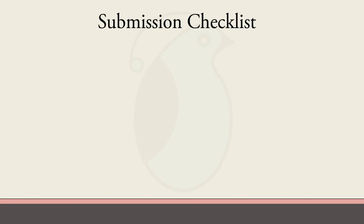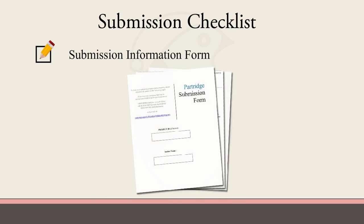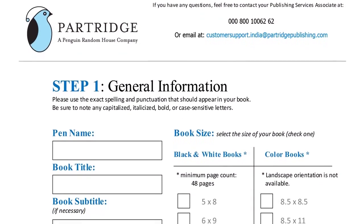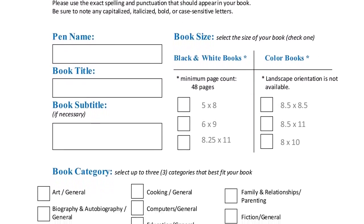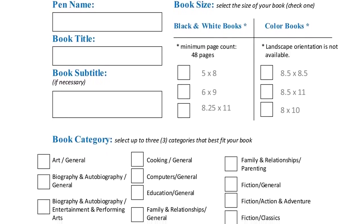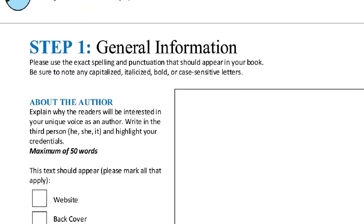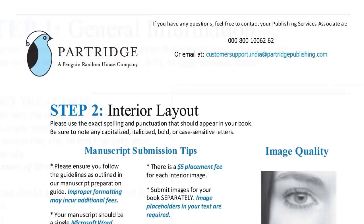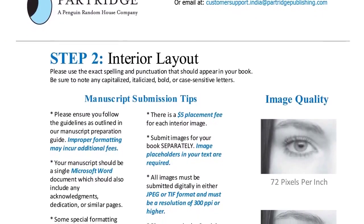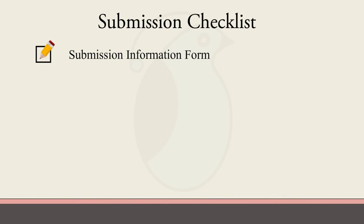Let's look at a list of things you need to include in your submission. The submission information form is very important. It will first ask for your book's title, a subtitle if you have one, and your pen name. Then you'll choose your final book size and enter your About the Book and About the Author text. It's also where you can share your thoughts and ideas about the cover design and interior layout.